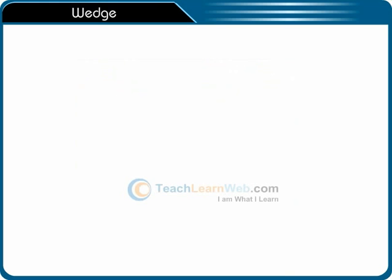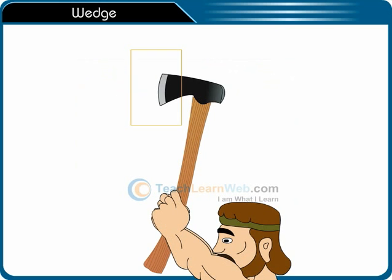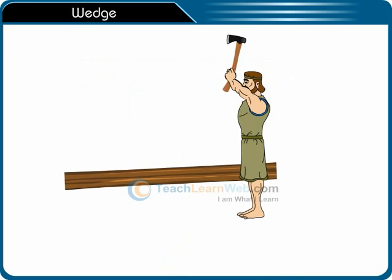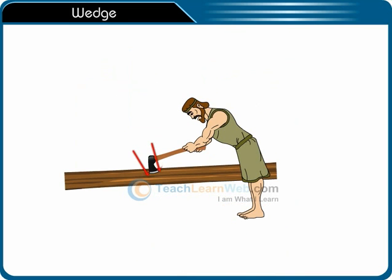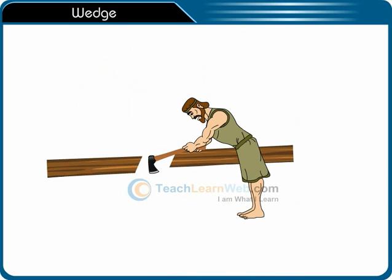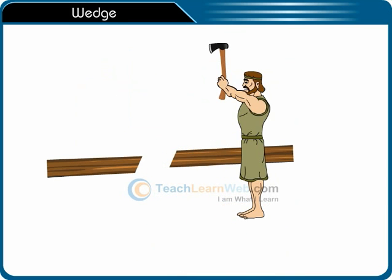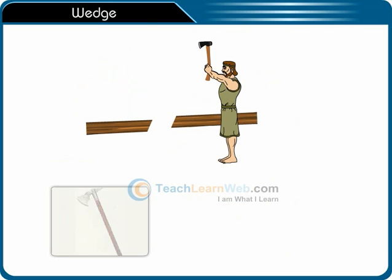Wedge: A double inclined plane is called a wedge. It is used to tear apart solid objects with its sharp end. Examples include an axe and a knife.